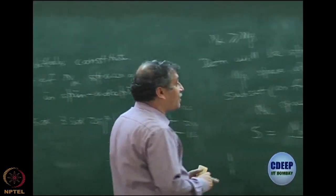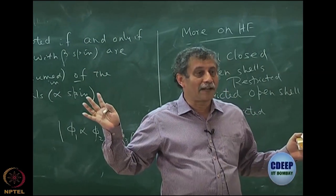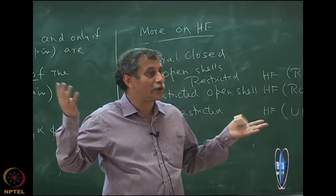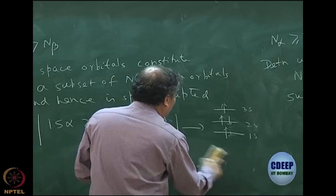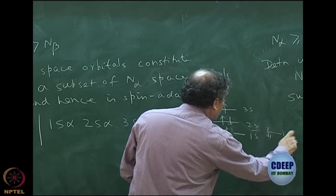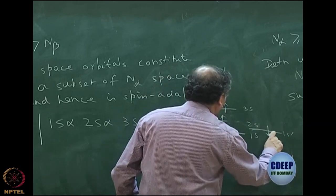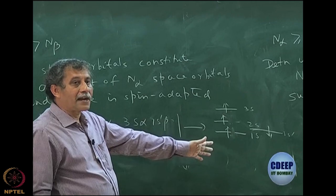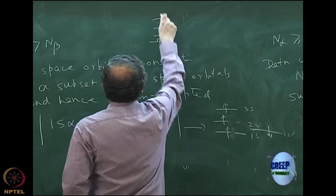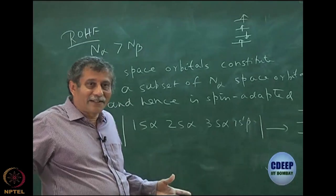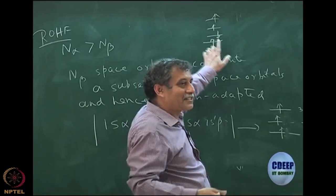On the other hand, unrestricted Hartree-Fock by definition has no such restrictions — the n-beta space orbitals need not be a subset of n-alpha. For example, with 1s-prime-beta, the alpha and beta are not sitting in the same orbital — beta is at 1s-prime which is slightly different. So the UHF determinant is not spin-adapted. You might count n-alpha minus n-beta and call it a triplet, but that is not right when the space orbitals are different.